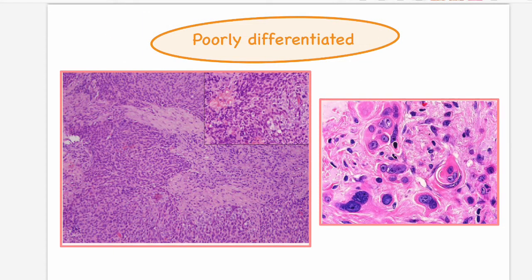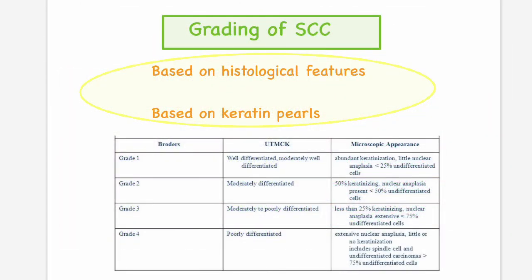Moving on to the poorly differentiated variety of oral squamous cell carcinoma: these lesions are very difficult to diagnose because the cells are very primitive and uncharacteristic, meaning the resemblance to squamous cells is not apparent. These cells are very rapidly dividing, meaning mitosis is very prevalent. Cohesiveness is lost and cells are extremely pleomorphic. Keratin production is almost negligible, and we will not see keratin pearls.